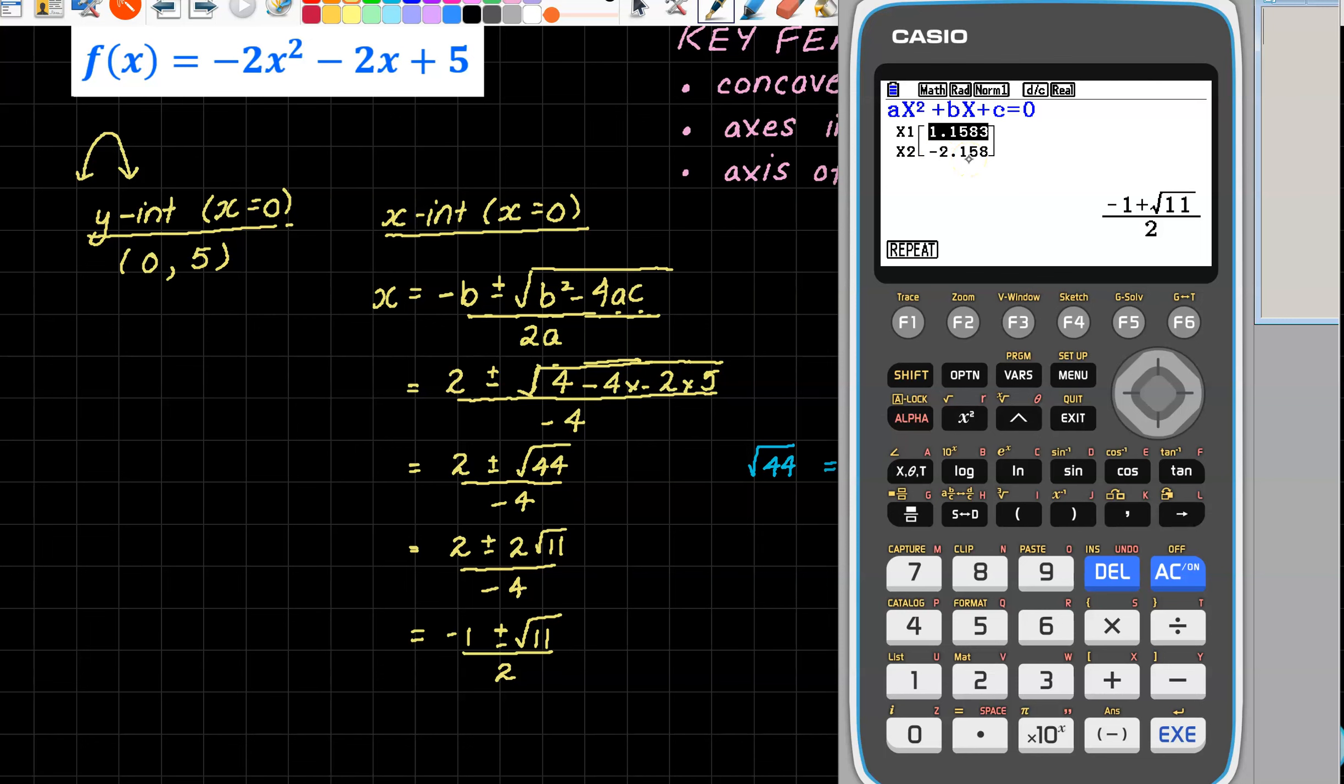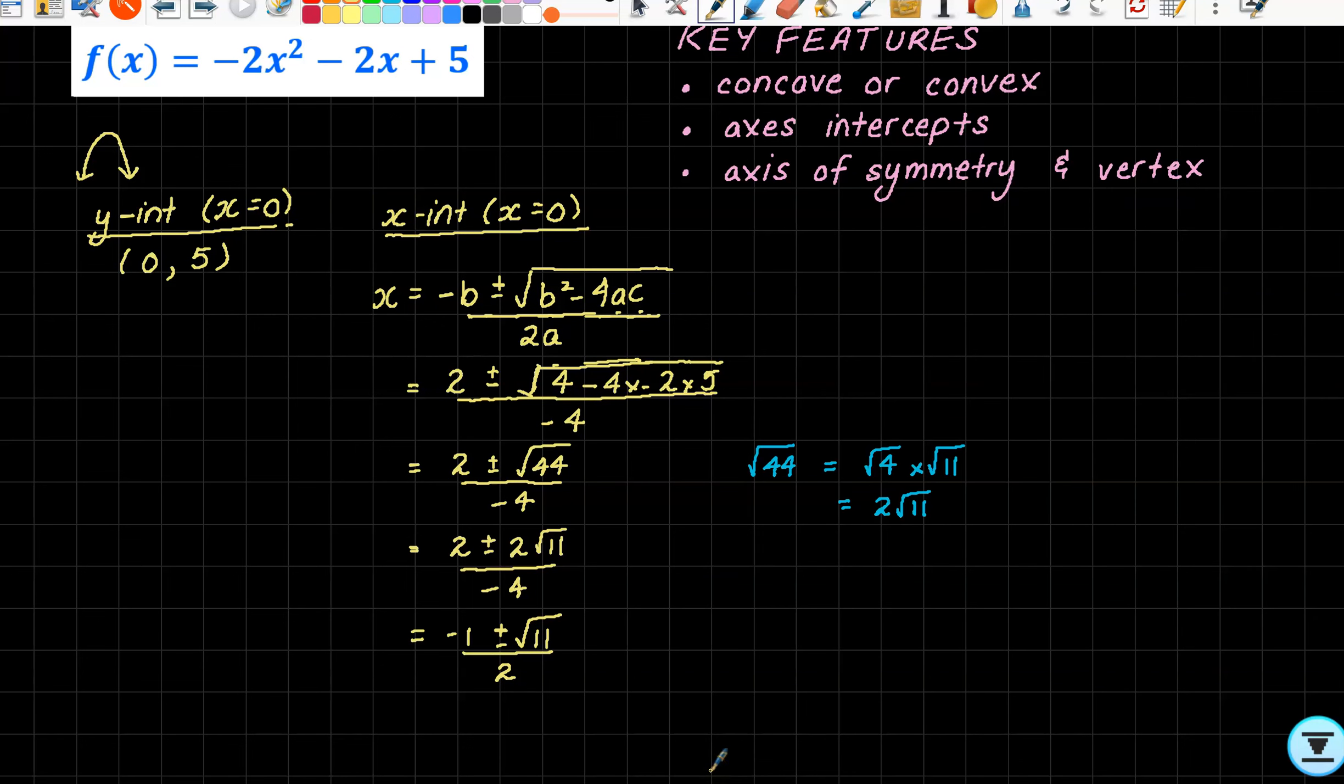So concave, we know. Axis intercepts we've got. Our axis of symmetry, we can get that just from x = -b/2a. Pretty simple. You can see that that's part of our quadratic formula—it's the average of these two.